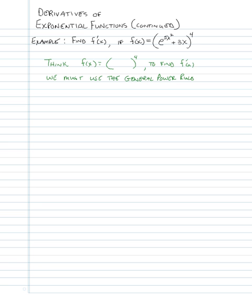We have to be careful not to concentrate on the inside before we see the big picture. The big picture is parentheses with a power on it, and that reeks of the general power rule. The general power rule says that if we have something in parentheses with a power on it, we bring the power down in front, reduce the power by one — so that would be a power of three — and then the chain rule part tells us to multiply by the derivative of what's inside the parentheses.